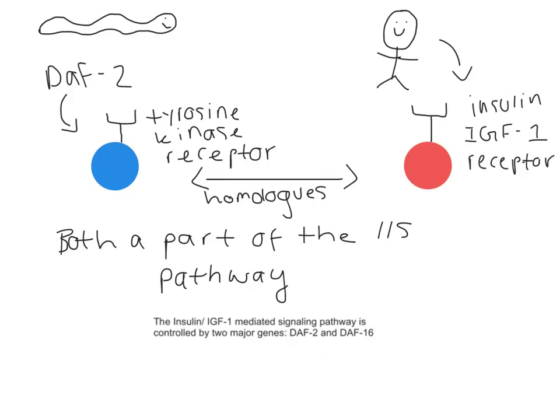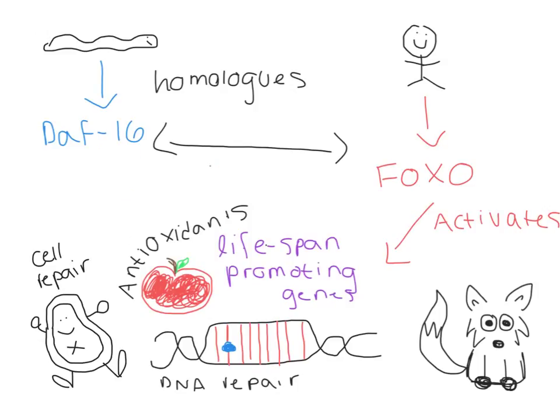DAF2 encodes for a receptor tyrosine kinase, which in humans is homologous to the insulin and IGF1 receptors. The main target of the IIS pathway is DAF16, which is a forkhead FOXO homolog.